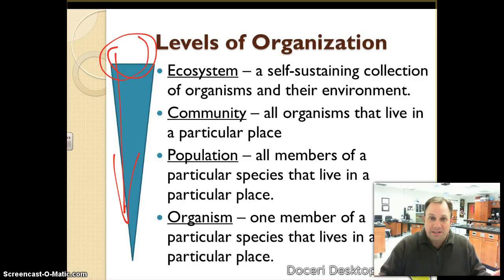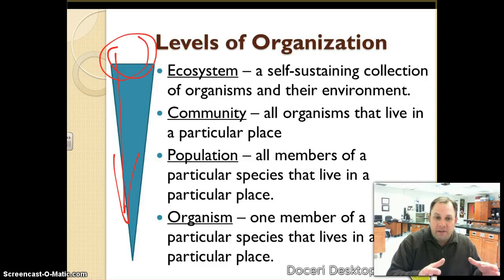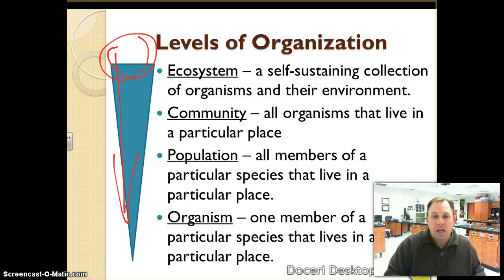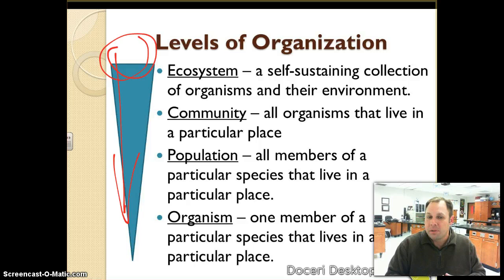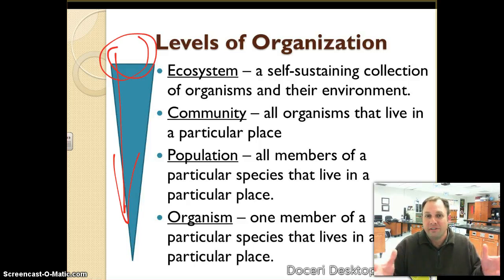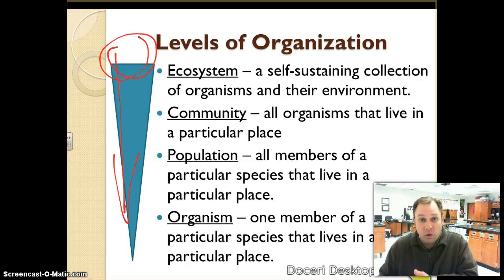We could then break the state of Texas down into, say, Collin County, which has a more specific type of plants and animals. Within Collin County, you have the city of Allen with its specific population of humans or rabbits. And then you have the individual organism — that single rabbit, for example.